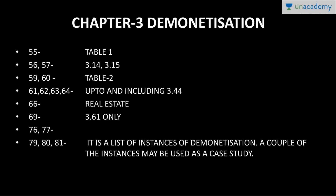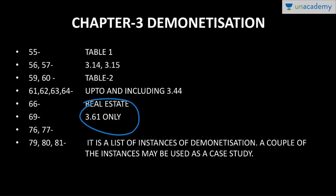Chapter three covers demonetization. Page 55, Table 1 gives background facts — questions will be asked from it. Page 66 talks about real estate. Then page 79, 80, and 81 cover instances of demonetization in the world. Chapter four is 'The Festering Twin Balance Sheet Problem.'